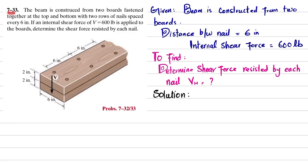Welcome back, problem 7-33. The beam is constructed from two boards fastened together at top and bottom with two rows of nails spaced every six inches. If an internal shear force of 600 pounds is applied to the boards, determine the shear force resisted by each nail.